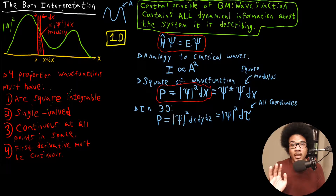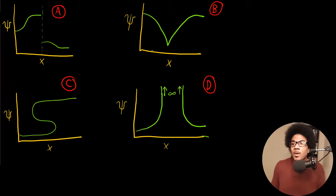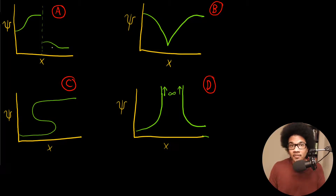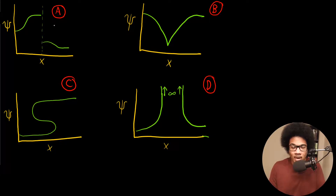Let's look at a few example plots and see if they meet the Born interpretation, and if not, what's wrong with them. For example A, this is not going to be a valid wave function. The reason is that it's not continuous — this function has a huge jump discontinuity located at a specific point. So it's going to be an invalid wave function within the Born interpretation. The answer is no, because it is not continuous.